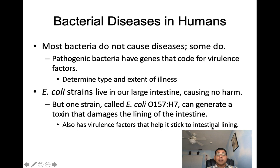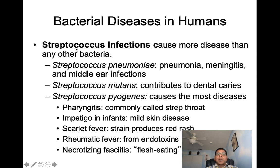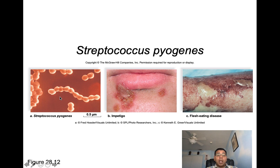Streptococcus infections cause more disease than any other bacteria. Streptococcus pneumoniae causes pneumonia, meningitis, and middle ear infections. Streptococcus mutans contributes to dental caries. Streptococcus pyogenes causes the most diseases, including pharyngitis (strep throat), impetigo in infants, mild skin disease, scarlet fever (a strain producing a red rash), rheumatic fever (which forms endotoxins), and necrotizing fasciitis, which is a flesh-eating bacterial disease.